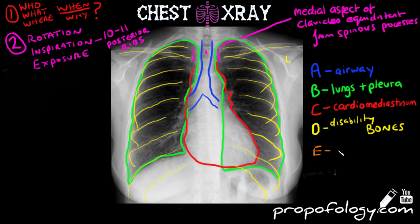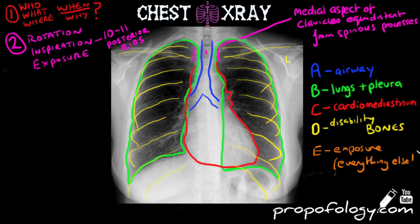Lastly, E stands for exposure and everything else. Look for any subcutaneous emphysema, which is air in the skin. Look for any fragments in the skin, and look for artifacts such as ECG leads or oxygen tubing that could confuse your picture. You should also take this opportunity to look for any tubes that might have been inserted into the patient, such as an endotracheal tube, a nasogastric tube, or any central venous access.